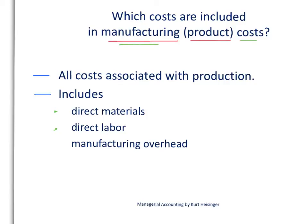The third category is manufacturing overhead — everything else related to production other than direct materials and direct labor. If we are producing racing bikes in a factory, the costs of that factory would go into manufacturing overhead: the rent on the factory, insurance related to the factory, maintenance on the factory, utilities within the factory — any cost associated with the factory goes into this manufacturing overhead category.